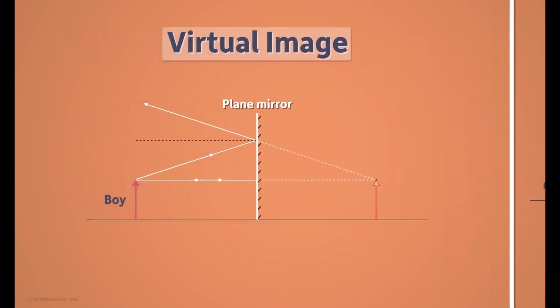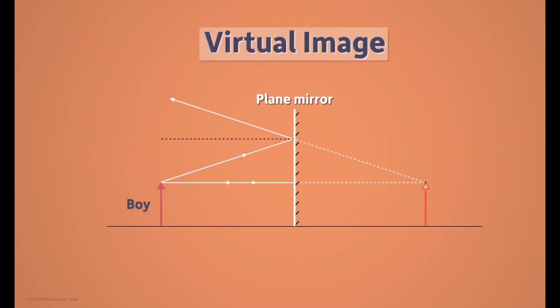When we look at a virtual image, it appears to us that the light rays are diverging from a point somewhere behind the mirror. But in reality, they aren't as no light reaches behind the mirror. It's only our perception.